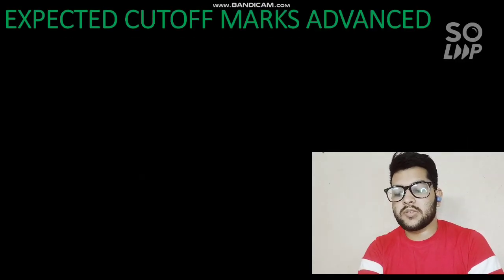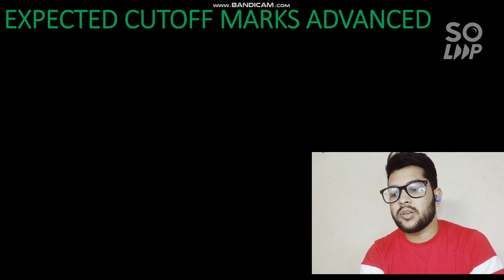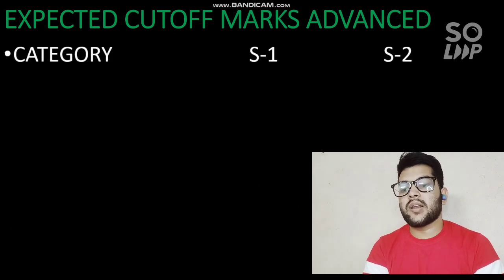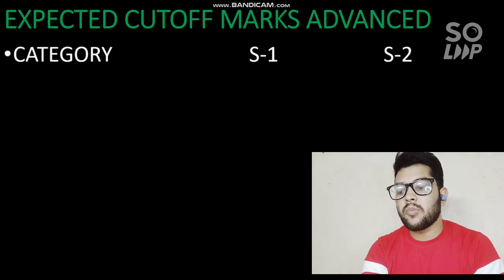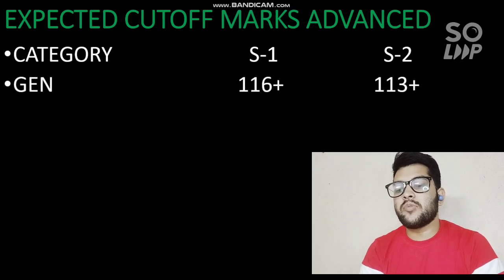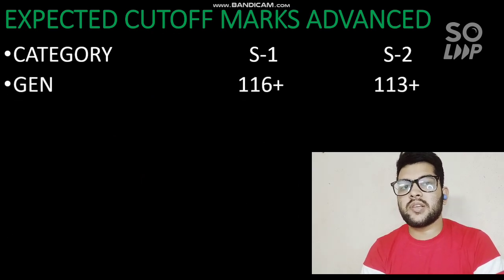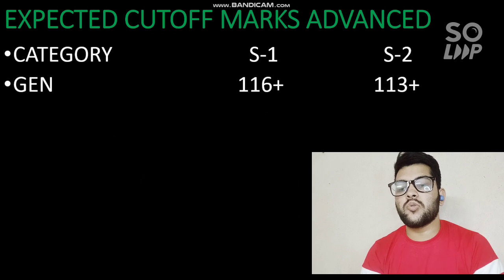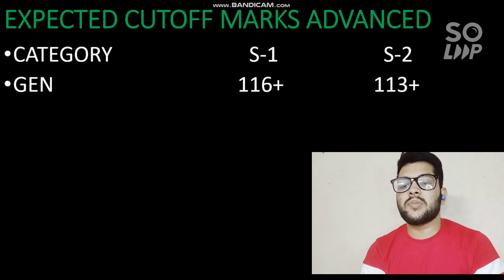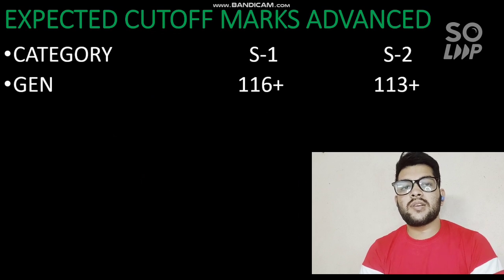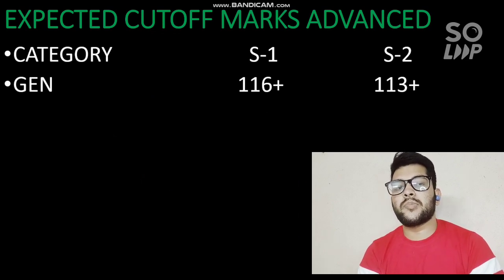Now I'll talk about the expected category-wise cutoff marks for JEE Advanced — this is very important, so listen carefully. For the General category: if you appeared in Shift 1, you should have at least 116+ marks to be eligible for JEE Advanced. For Shift 2, it is 113+ — since Shift 2 is considered slightly tougher.